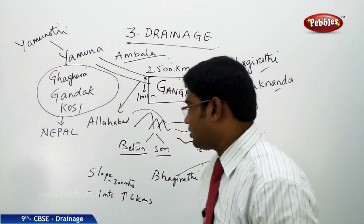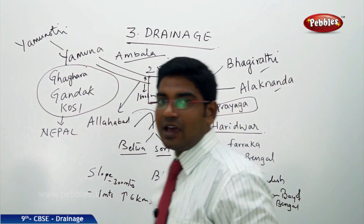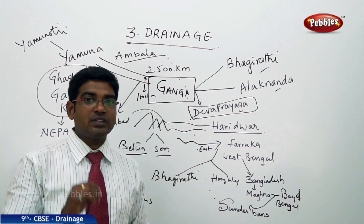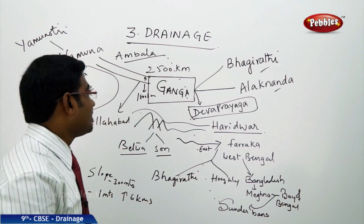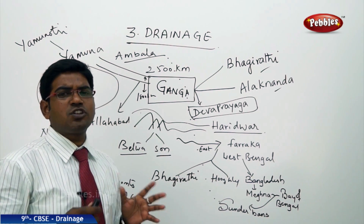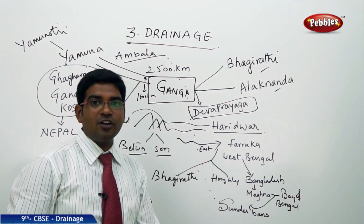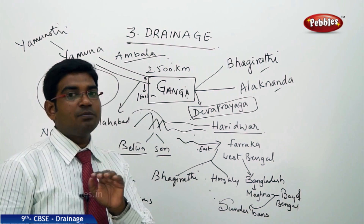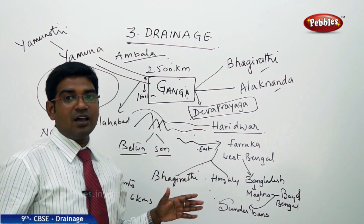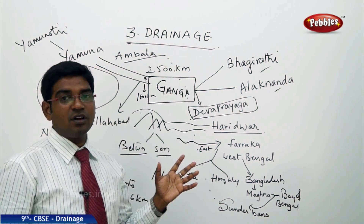River Ganga plays a very vital role. It makes a large journey of 2,500 kilometers, similar to River Indus's 2,900 kilometers, spreading its various tributaries across the entire northern Indian plain. That is why it is rightly known as the Indo-Gangetic plain. Ganga covers nearly 1,800 kilometers of width across the entire northern plains.